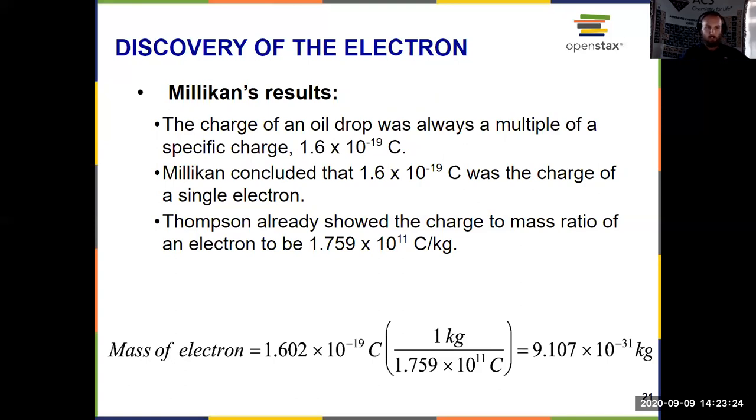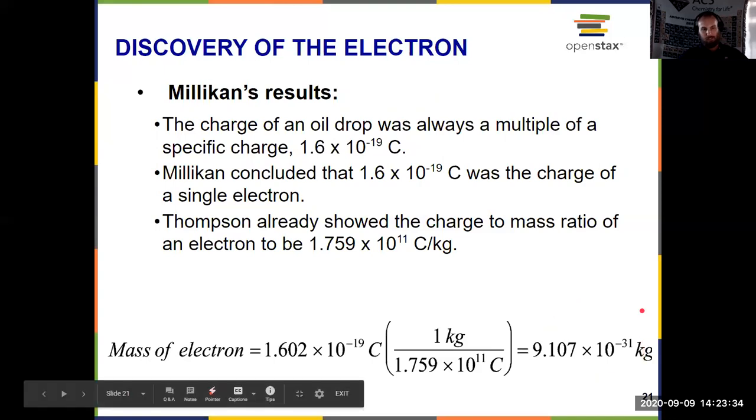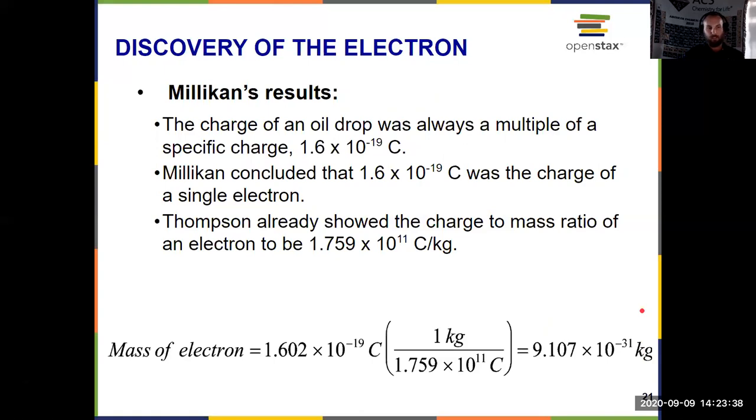And because he knew the charge, and Thompson had already showed the charge to mass ratio, that allowed us to determine the mass of an electron, which is over here, almost insignificant, not an appreciable amount of mass, these electrons, 9.1 times 10 to the negative 31 kilograms. So that gave us the electron.